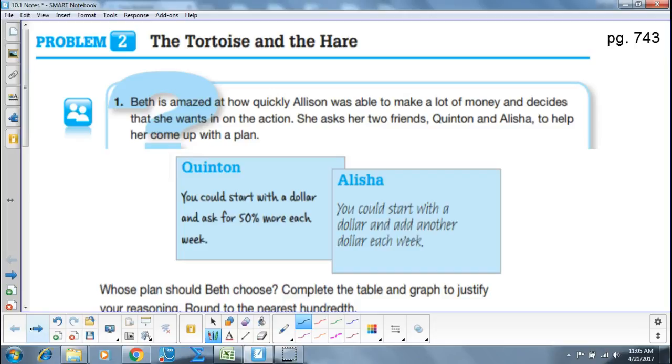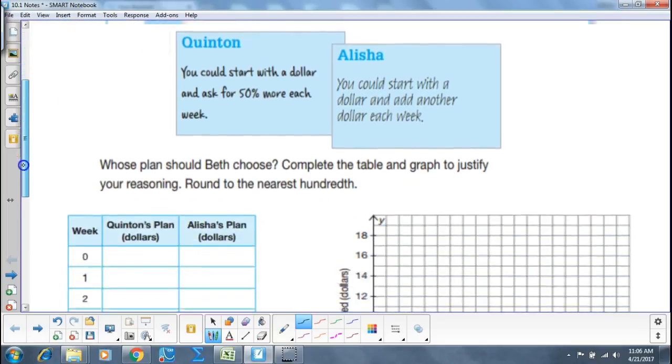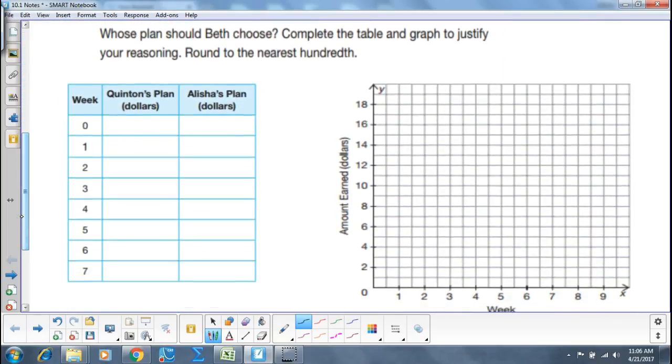What I would like you and your groups to do now, and I'm going to give you about 10 minutes to do this, I would like you to fill in the chart that fills out how much money Quentin and Alicia's plan would cover, then graph both plans, and then really think about which plan you would choose under which scenarios.